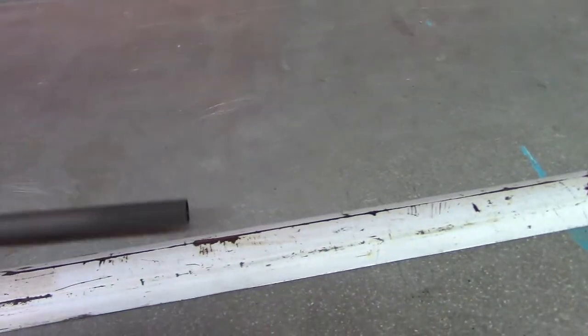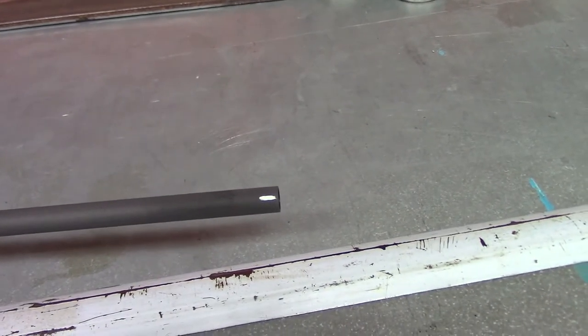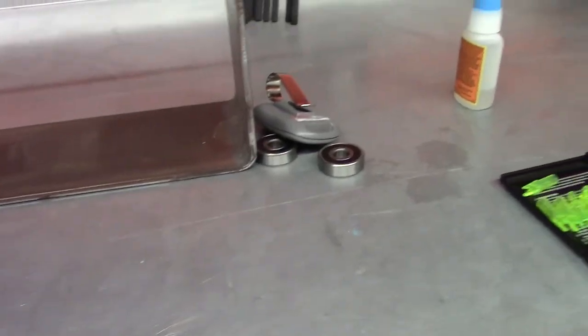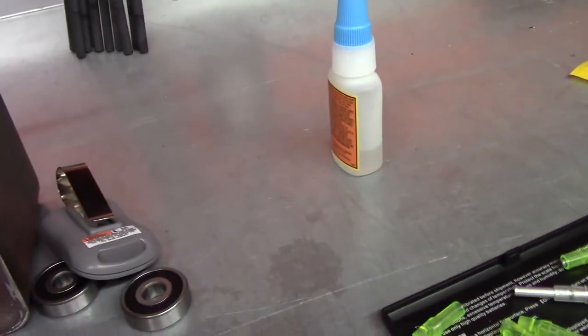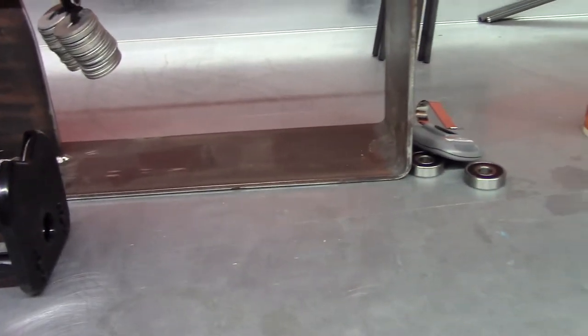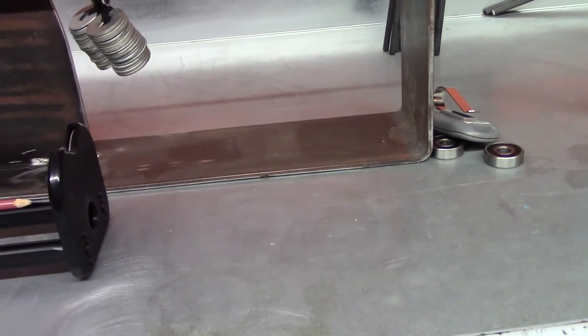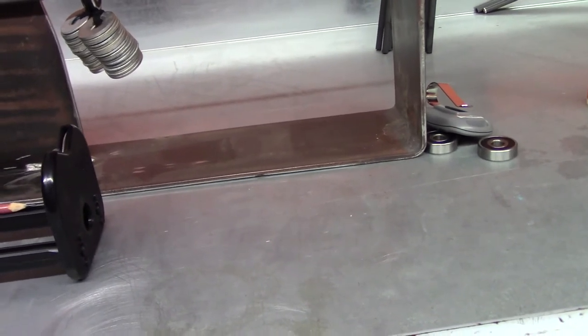And then down at the very end, I'll show you on these arrows I've already done. Down on the very end, I put a little mark with a permanent marker. Once I get them cut, that is going to tell me where I'm going to put my fletching, because I do my cock vane at the very top, which would be my spine, on every one of my arrows.